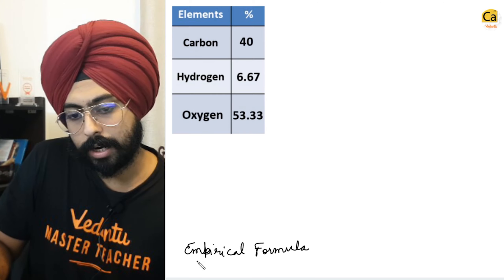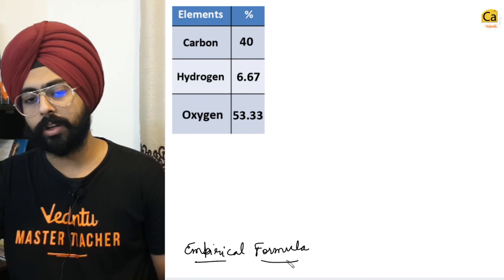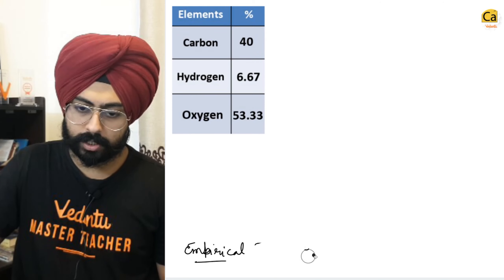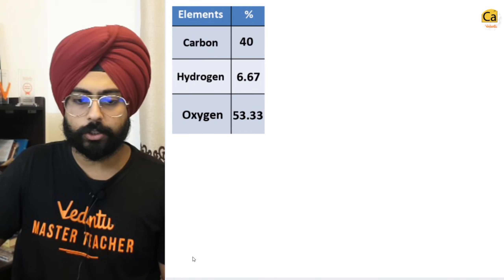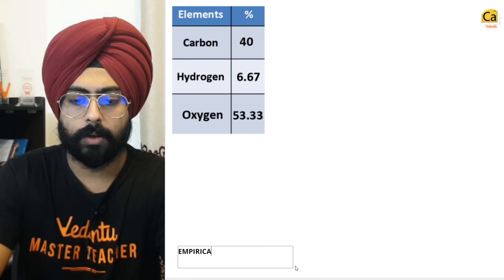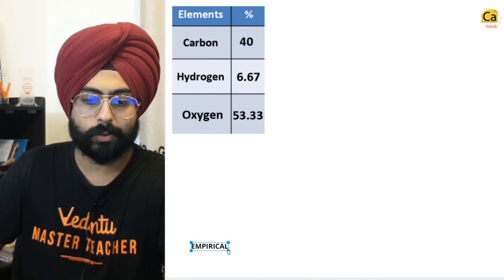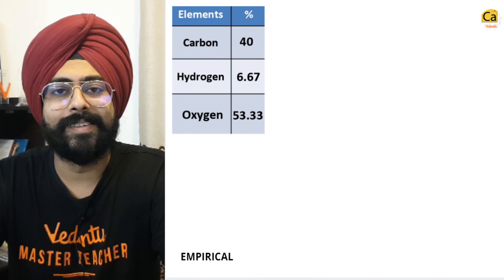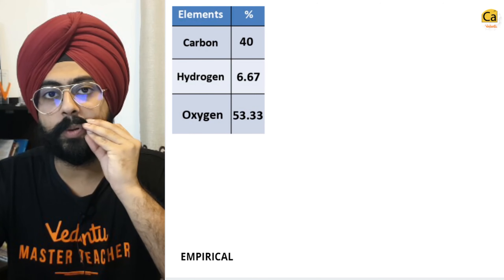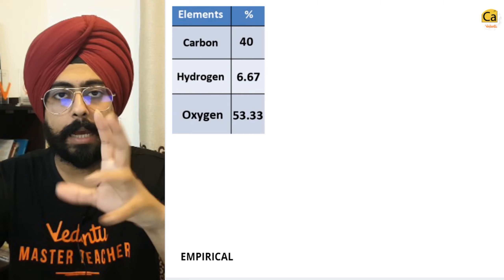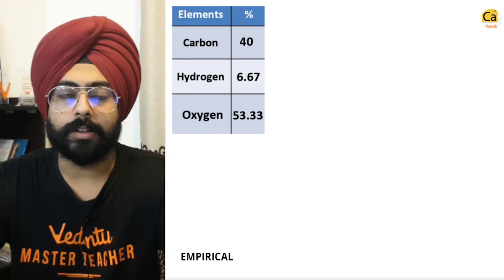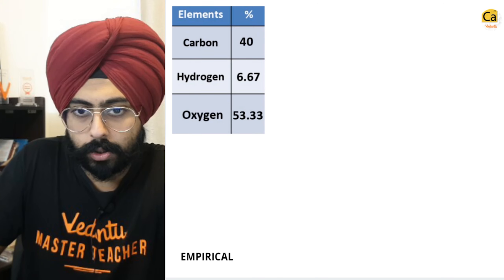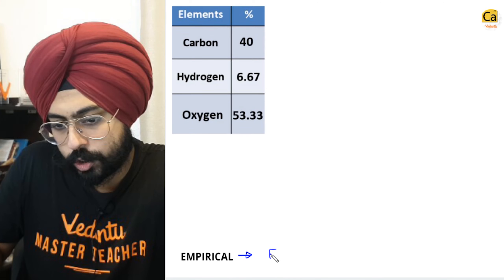Some of you have done this idea in ninth or tenth class. First of all, what is the meaning of the word 'Empirical'? A lot of you would be saying empirical means simplest or smallest ratio — but my dear friends, the word 'Empirical' stands for 'experimental'.